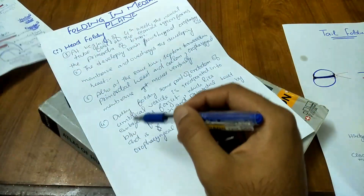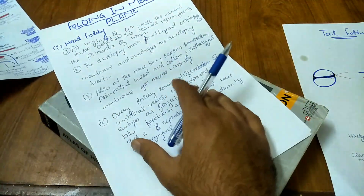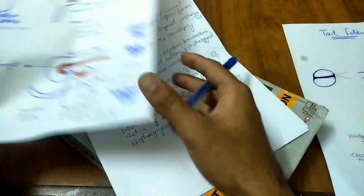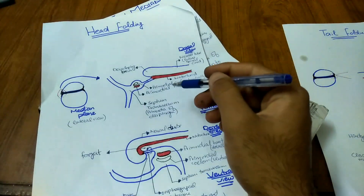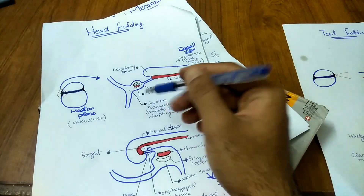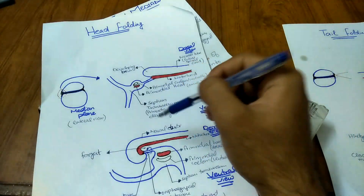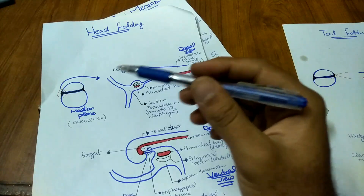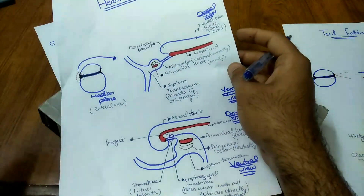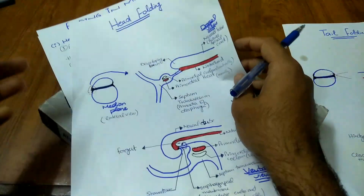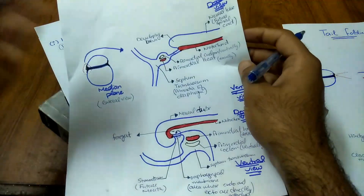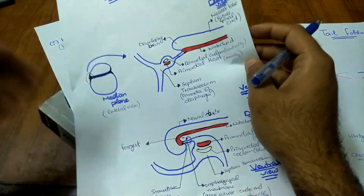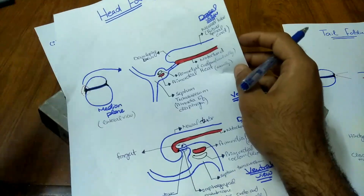So this is the head folding in the median plane. What was dorsally placed moves ventrally — that is what I have explained. This is all from the head folding. If you don't understand anything, you may ask in the comment section. If you like my videos, please like, share, and subscribe.